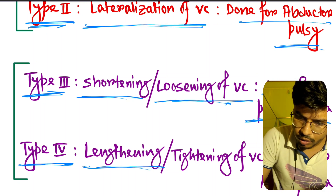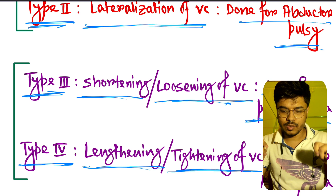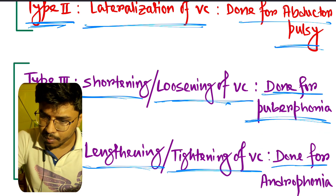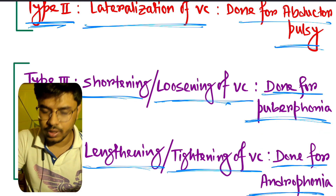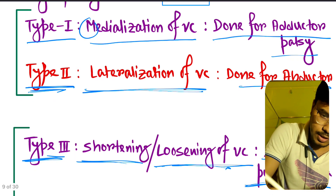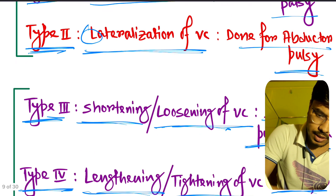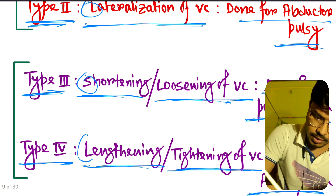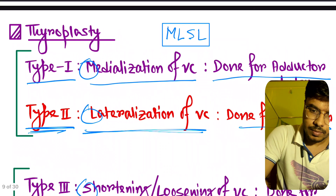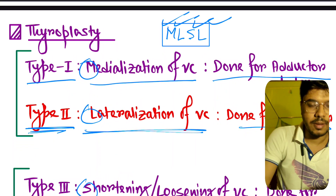Type 4 thyroplasty is the lengthening or tightening of the vocal cord. If we tighten the vocal cord, it will be lengthened. Type 4 is done for androphonia. So the mnemonic is MLSL: M means medialization, L means lateralization, S means shortening, L means lengthening.